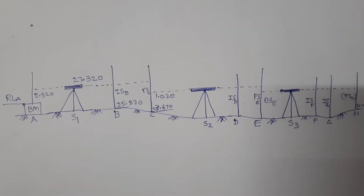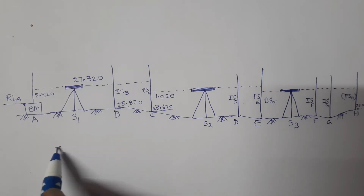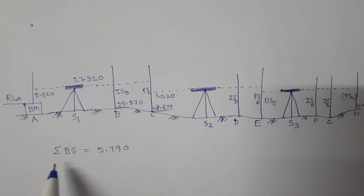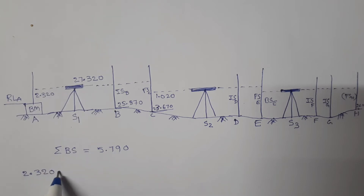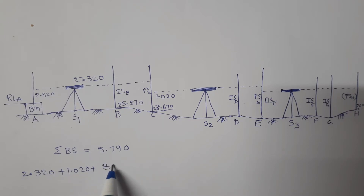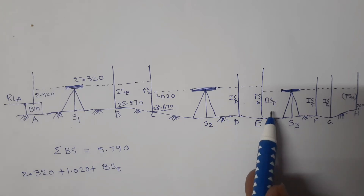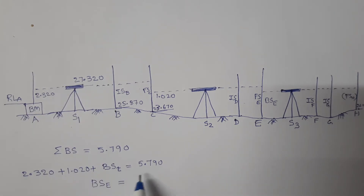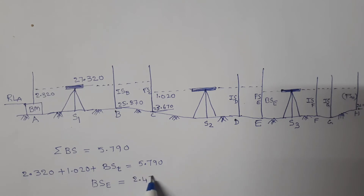In the question, the sum of back sights is given, which is equal to 5.790. The sum of all back sights equals 2.320 plus 1.020 plus the back sight reading on E. Therefore, back sight reading on E is equal to 5.790 minus 2.320 minus 1.020, which is equal to 2.450.